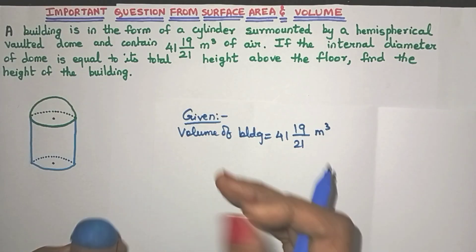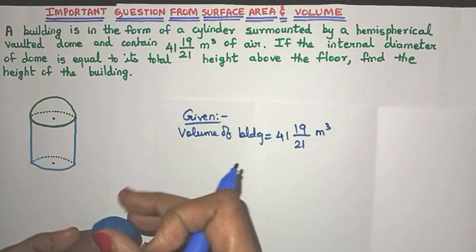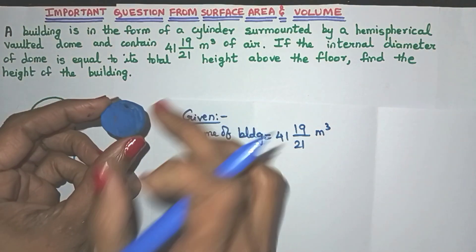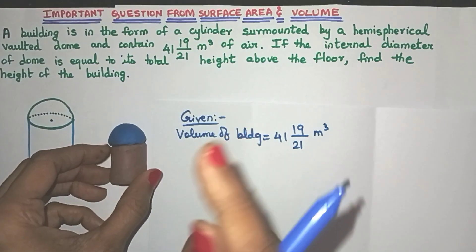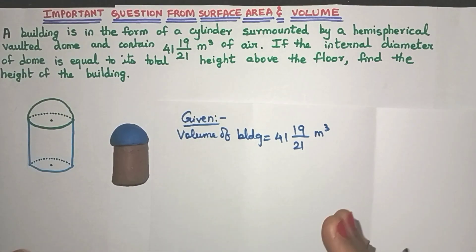Now the next sentence says, if the internal diameter of the dome. So what do we mean by internal diameter? This one. So if the internal diameter of the dome is equal to its total height above the floor.